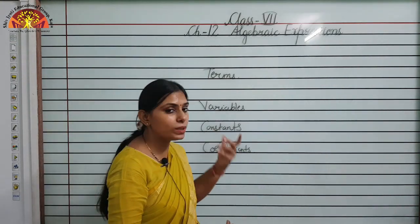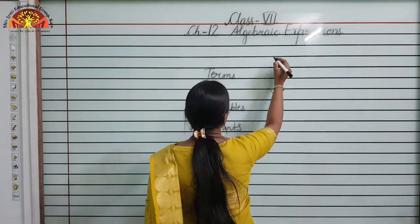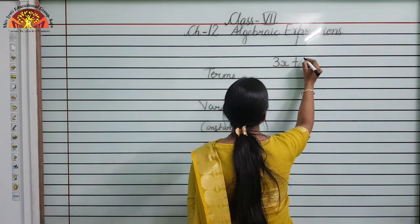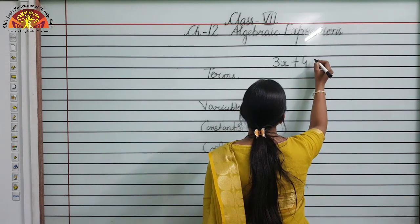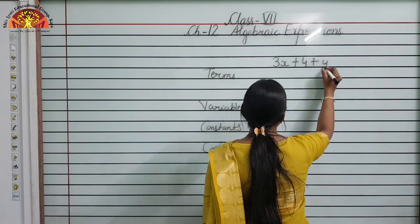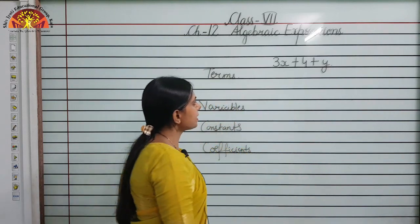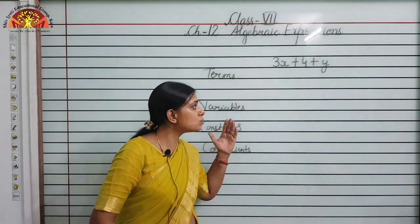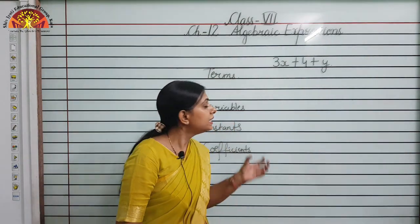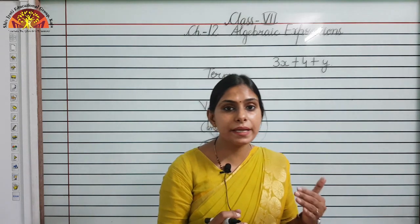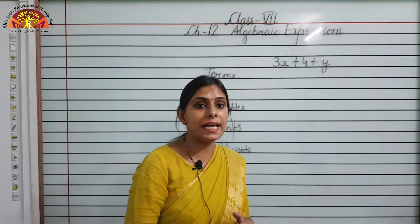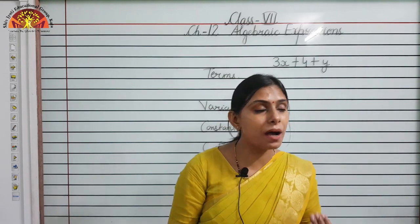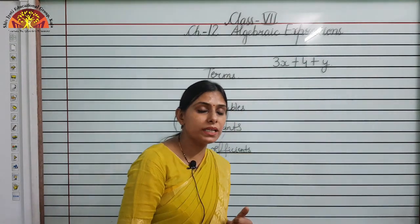First, we will write one algebraic expression. Suppose this is an algebraic expression. The different parts of an algebraic expression are known as terms. Jo algebraic expression ke different parts hote hain, unko hum terms bolte hain.